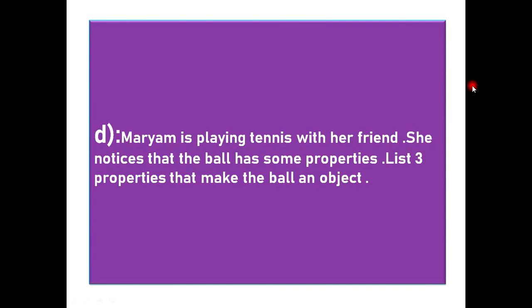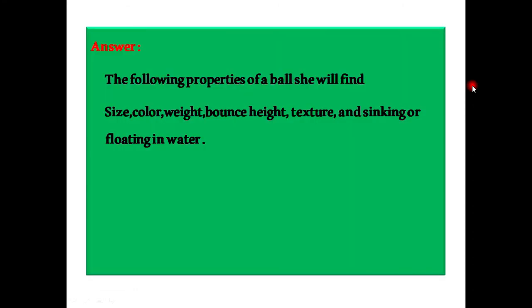D: Mariam is playing tennis with her friend. She notices that the ball has some properties. The three properties that make a ball an object. Answer: The following properties of the ball she will find - size, color, weight, bounce height, texture, and sinking or floating in water.